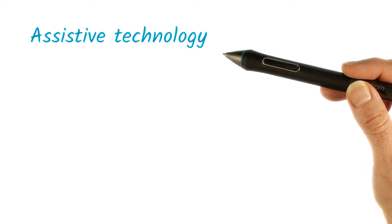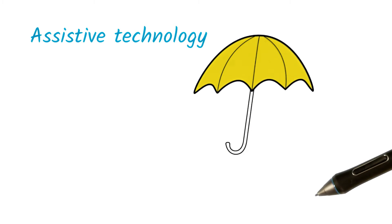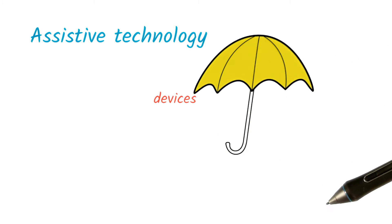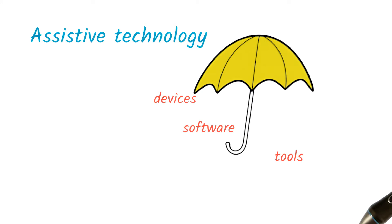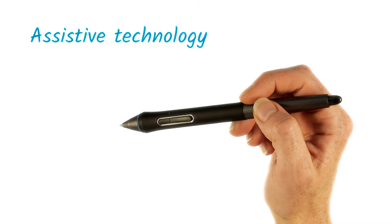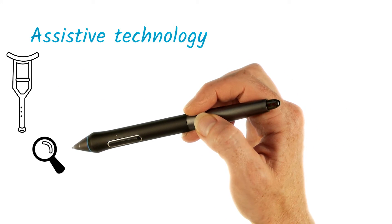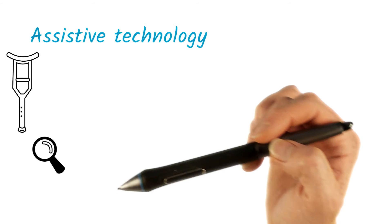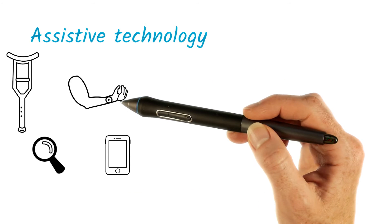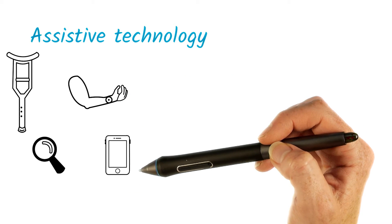Assistive technology is an umbrella term for a broad range of devices, software, and tools that help any person with a disability complete a task. In the broader sense, this includes something as low tech as a crutch to help someone walk or a magnifying glass to assist reading, or as high tech as a robotic prosthesis or image recognition software running on a smartphone.